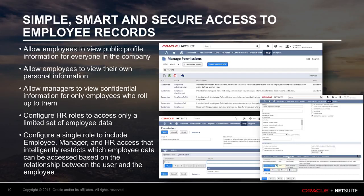The new HCM permissions feature allows companies to safely permit access to employee data without disclosing sensitive or confidential information to those who shouldn't see it. These new permissions allow users to view other employees while restricting what data they see based on their relationship to that employee. There are three new permissions supported: public employee profile, a manager view, and a limited HR view of employee data.